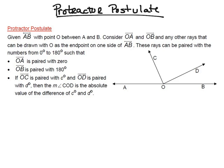You've got to imagine that we have a protractor right over these angles here. If we were to place that protractor over these angles, we would make sure that ray OA is going to be at zero degrees, so we would have zero degrees over here. Then we would also make sure that ray OB is paired with 180 degrees, so 180 degrees would be right over here. Then we would look at what degree we have at ray OC.